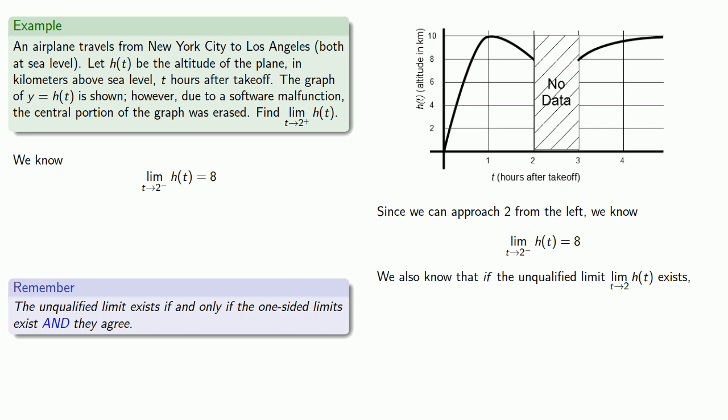And so we also know that if the unqualified limit as T approaches 2 of H of T exists, then the limit as T approaches 2 from below, and the limit as T approaches 2 from above, and the limit as T approaches 2, all have to be equal.